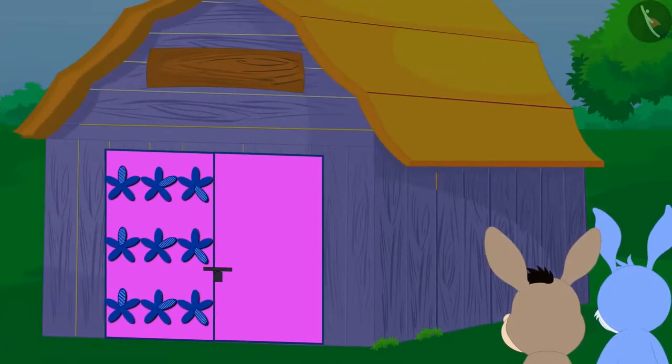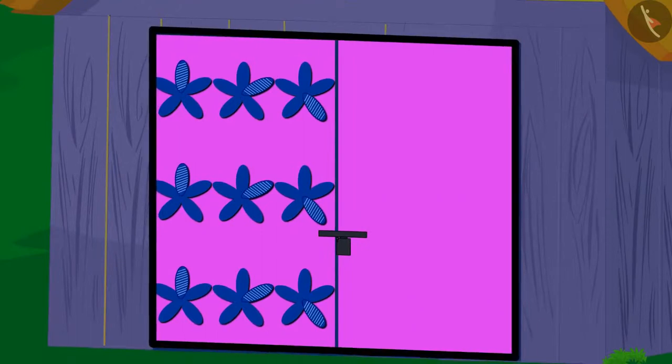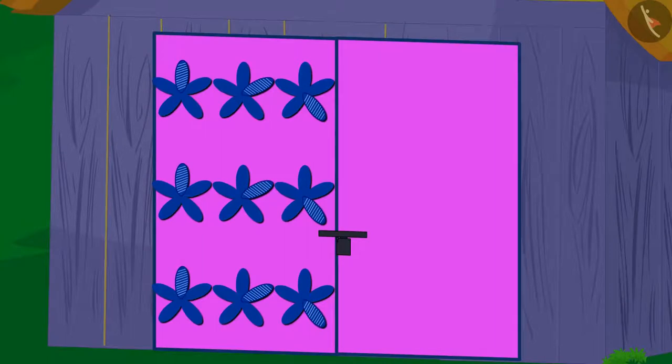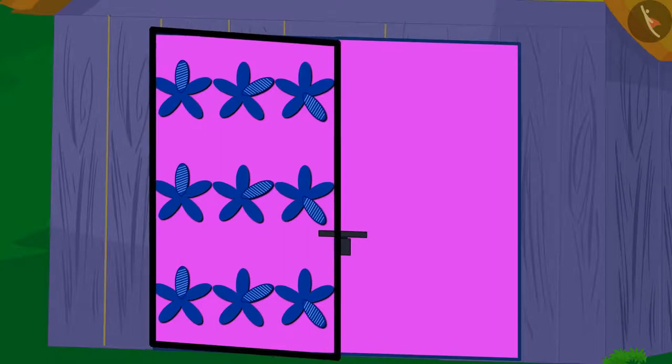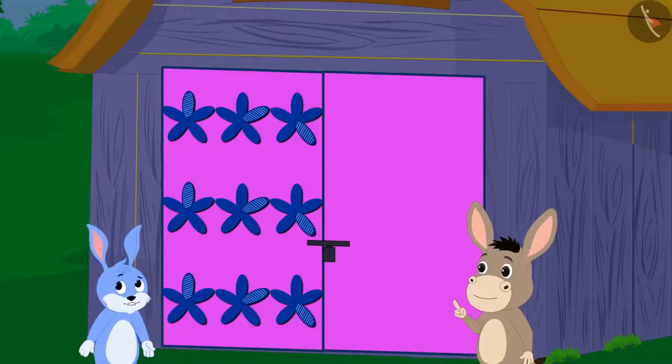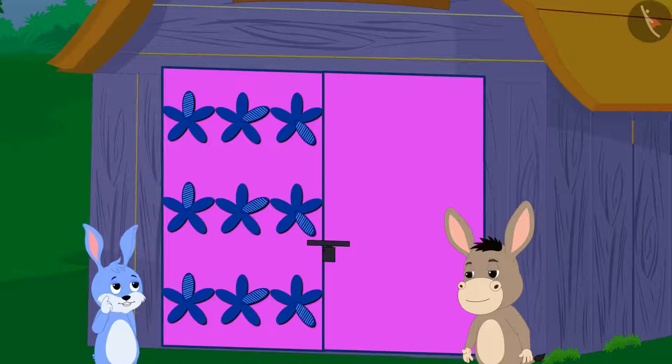As you continue to complete these incomplete patterns, you will see the way out of the forest. At first, Bhola and Banni saw such a pattern on the door of a house. Here, only one door has a pattern. Bhola and Banni together are completing this unfinished pattern.